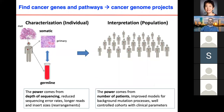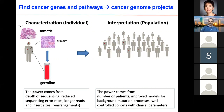For characterization, statistical power comes from depth of sequencing and number of samples per patient, as well as whether you do whole genome versus whole exome sequencing. For interpretation, statistical power comes from the number of patients — the more patients you have, the more power to detect drivers, subtypes, and clinical associations.